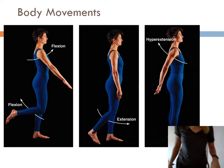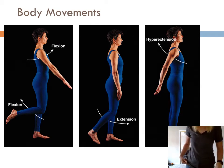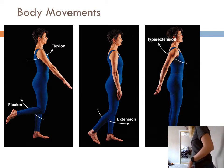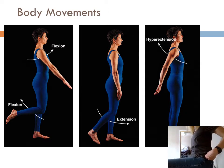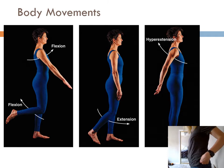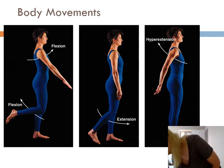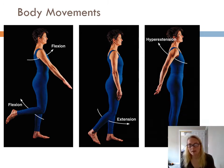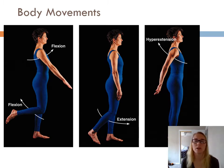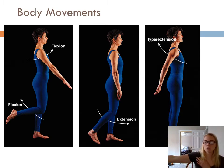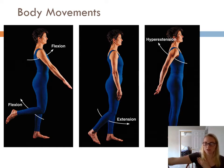We can do it at our legs too — flexion at the hip, extension at the hip. We also have, if you go past anatomical position, what's called hyperextension. On the shoulder, we can do flexion, extension, and hyperextension.